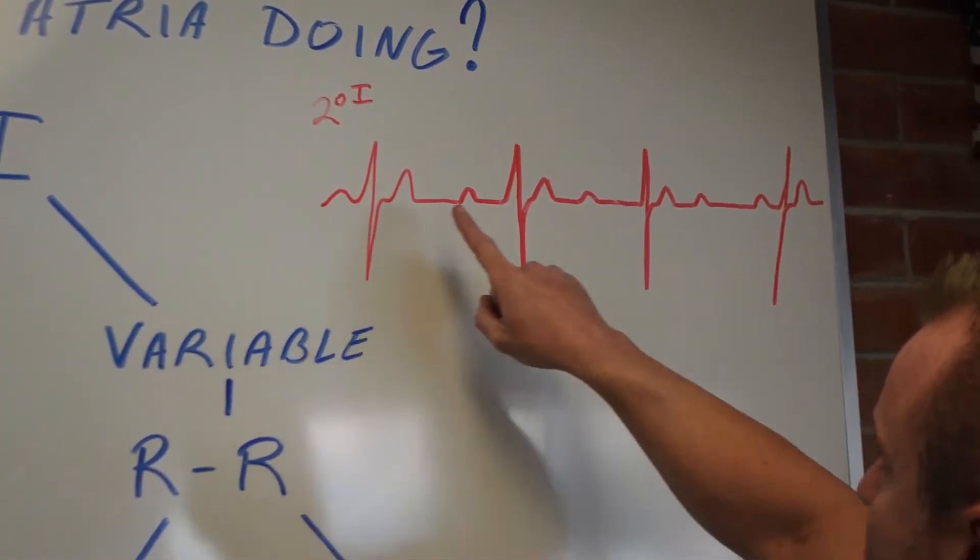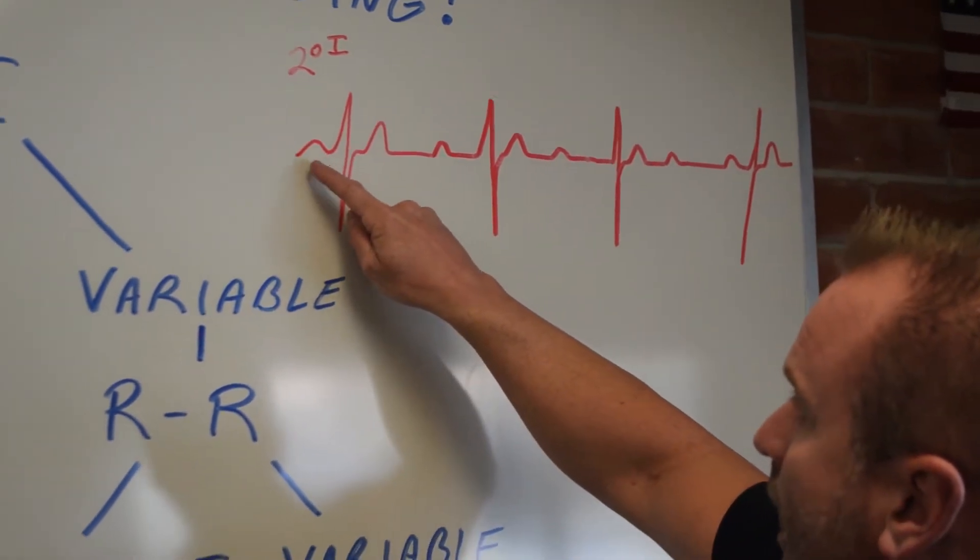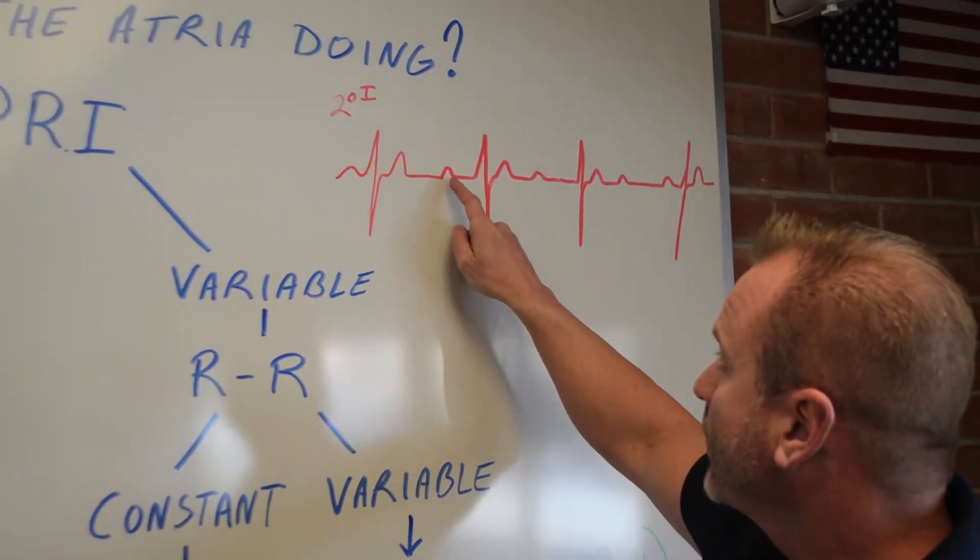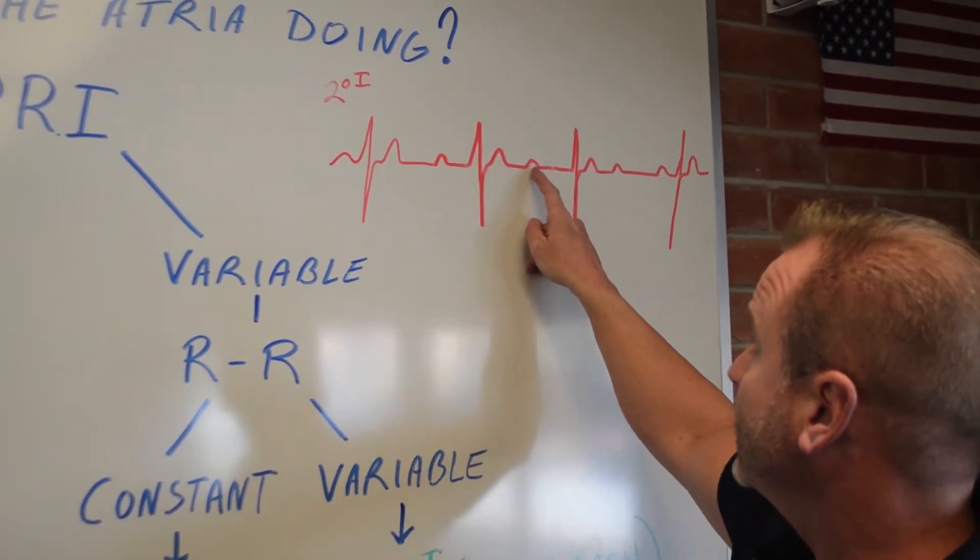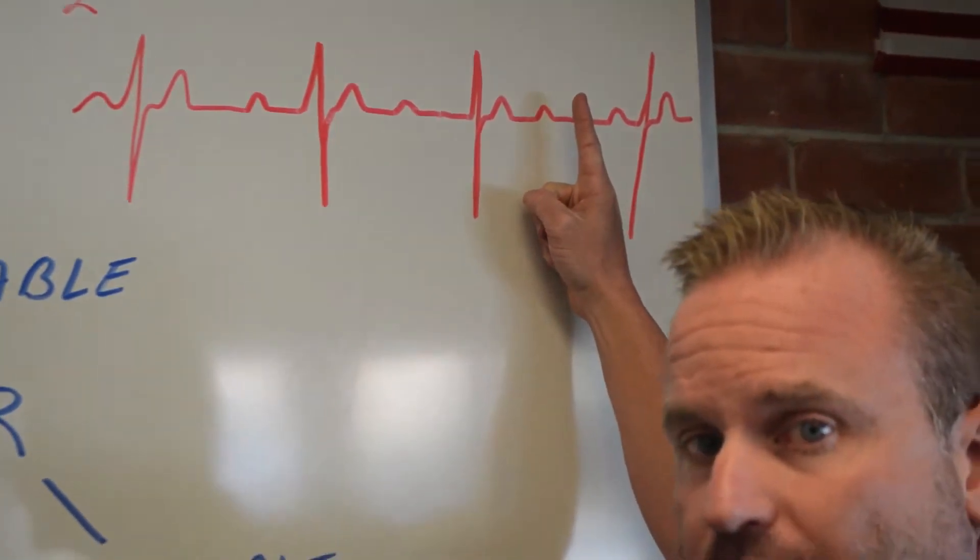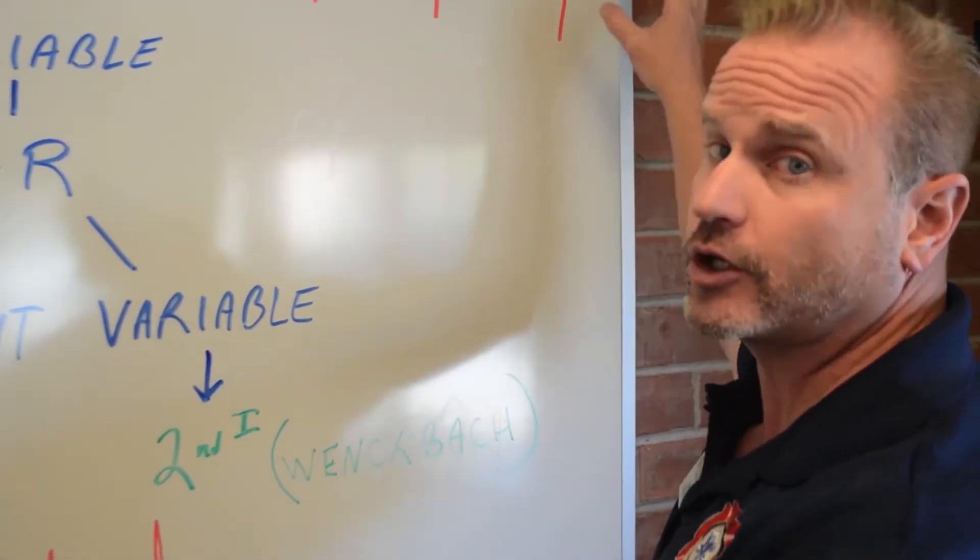You look at your complex, always read it left to right for this one. I have a normal PR complex, PR QRS. My P wave starts to get a little further away. It's getting further away again, and then it drops that complete QRS complex and then it'll start all over again.